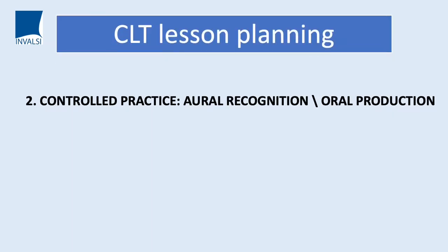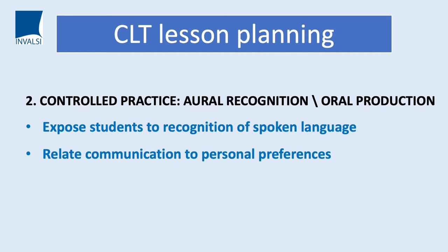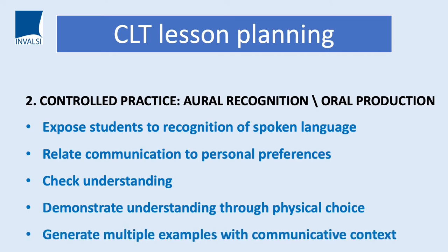Moving to controlled practice of oral recognition and production: this stage exposes students to spoken forms just presented, relates communication to personal preferences, and checks understanding. Students demonstrate understanding by making a physical choice — moving to show understanding. This activity generates multiple examples with a communicative context. This is called a physical choice.